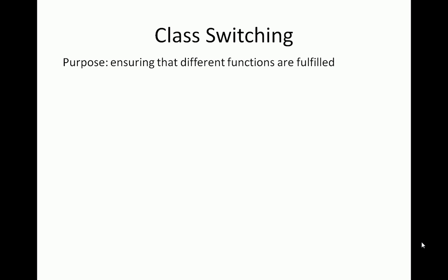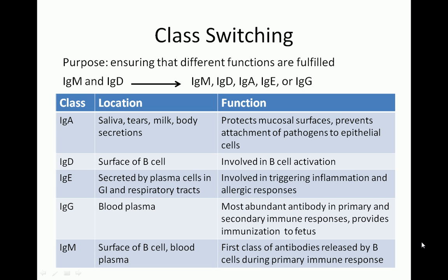When a B cell undergoes class switching, it goes from only being able to make IgM and IgD, to making one out of any of the five classes of immunoglobulins. As you can see in this table, each of the five classes of antibodies has a unique immunological function.